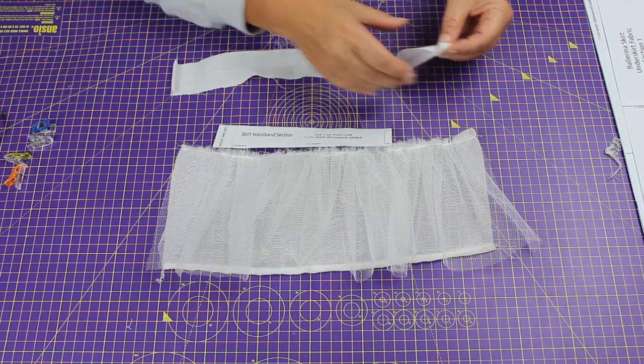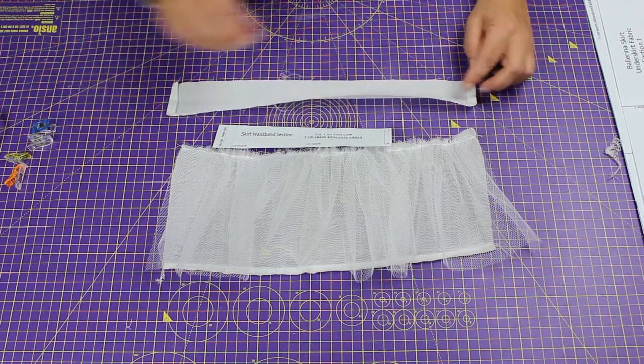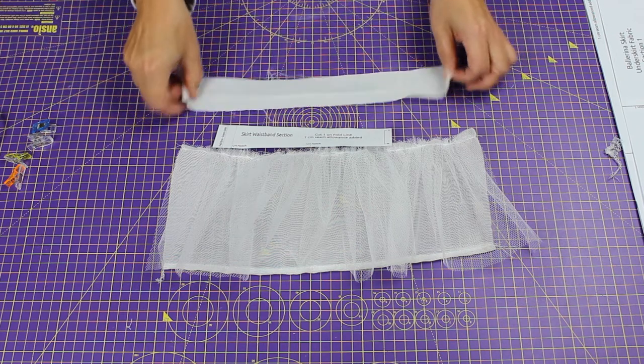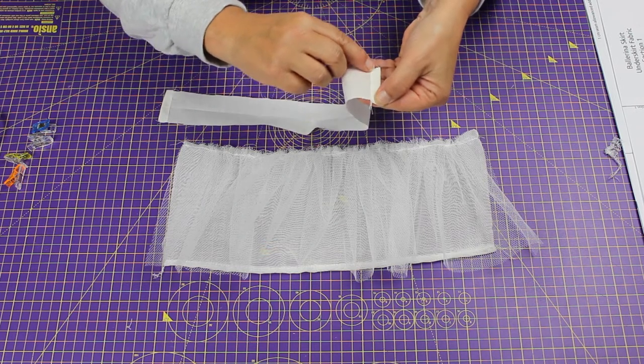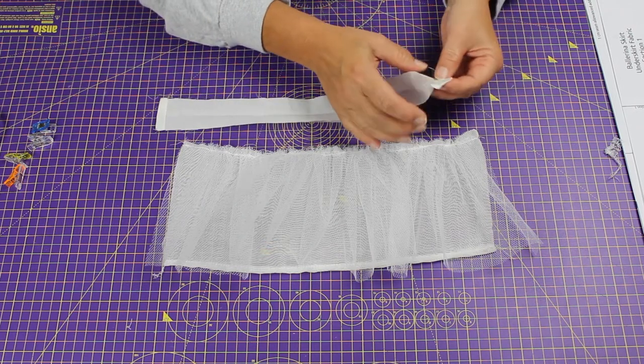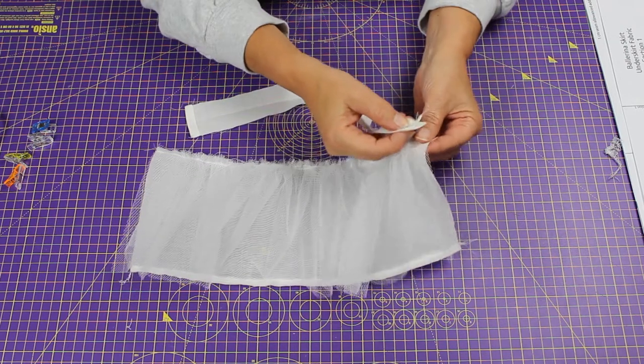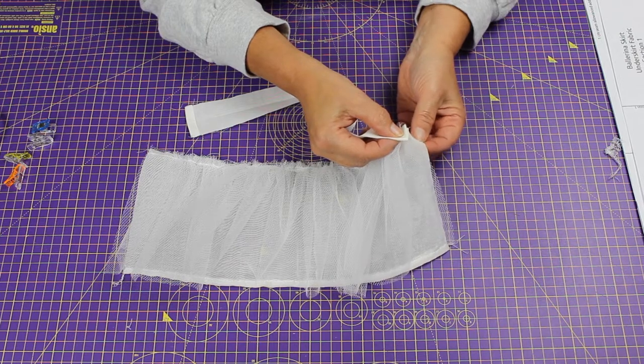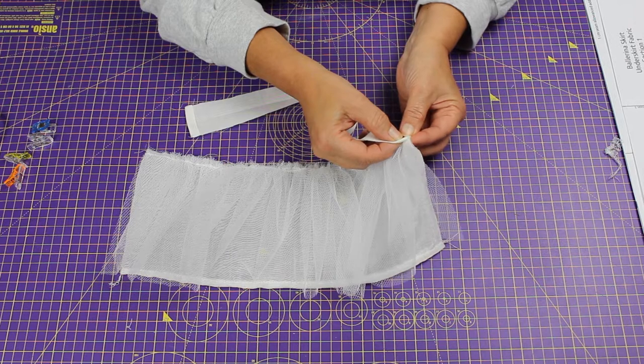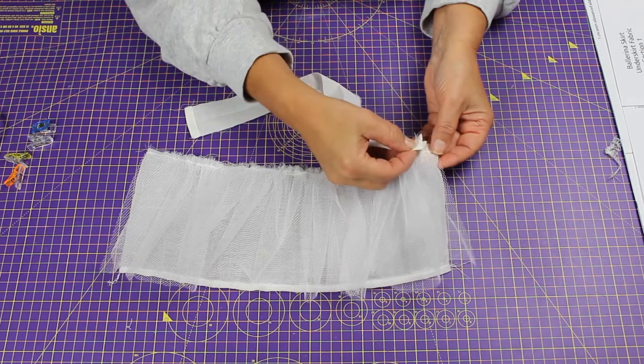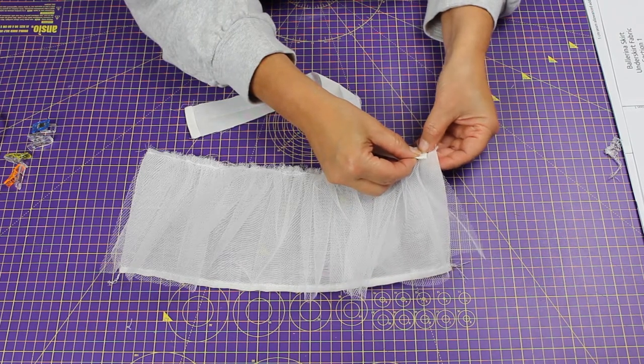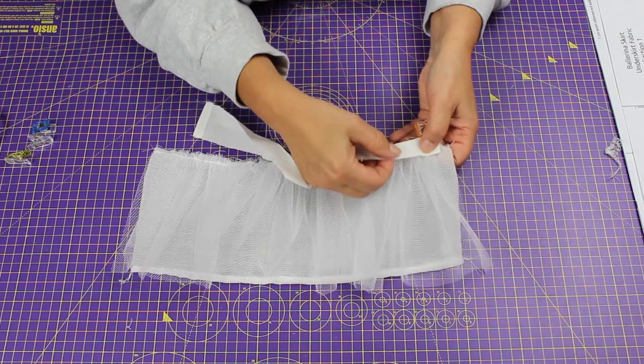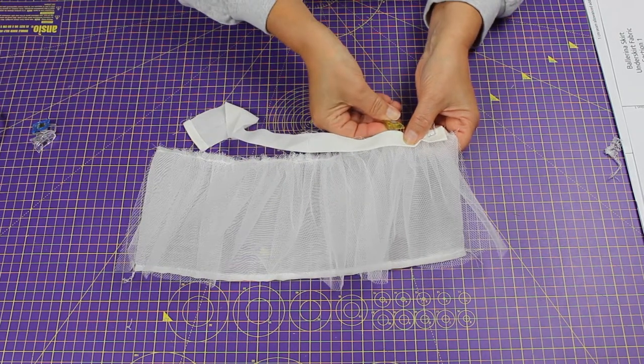I'm going to secure those folds down by stitching from there to there. Now the waistband can be folded in half, and I'm going to put the edge of the waistband just within a centimeter here. I'll eventually turn that back and hem that when I close up the back. I'm going to attach this waistband to the two layers at the waist.